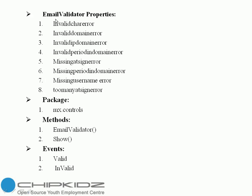Email address properties: 1st is invalid character error — error message when there are invalid characters in the email address. 2nd one, invalid domain name — error message when the suffix is not 2, 3, 4, or 6 characters long. 3rd, invalid IP domain error — error message when the IP domain is invalid. 4th is invalid period in domain error — error message when there is a consecutive period in the domain. 5th, missing @ sign error — error message where there is no @ sign in the email address. 6th, missing period domain error. 7th, missing username error — error message when there is no username. 8th is too many @ sign errors.